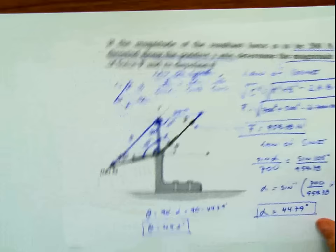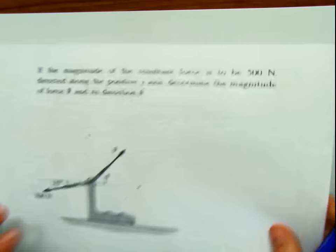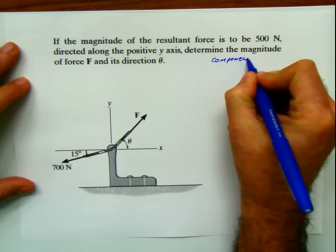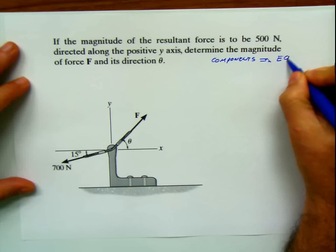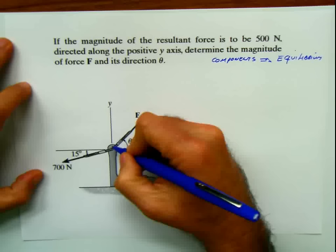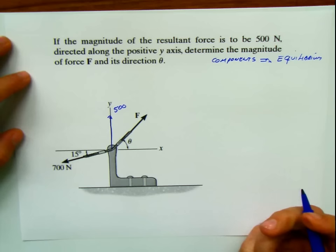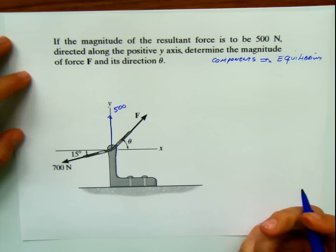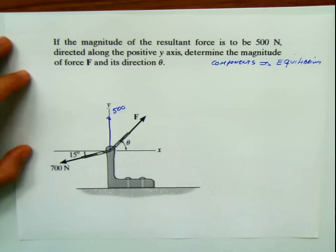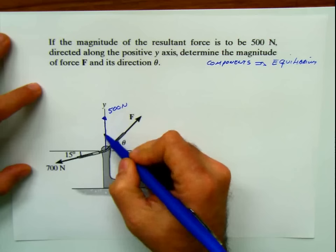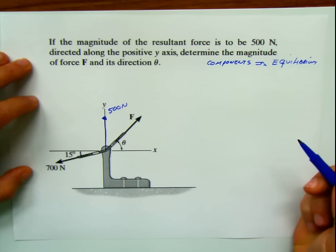Let's take the second approach, which is more of a vector approach. We're going to use the components of the forces and also the principles of equilibrium. I like this approach more because I like to see what is happening in the real world. Since the resultant is 500 Newtons acting vertically, the horizontal resultant force in x is zero — there's nothing in x; the resultant force is only vertical.